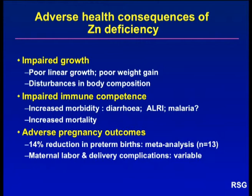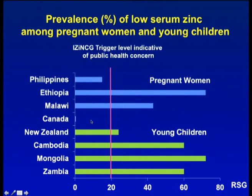In this slide, we present the prevalence of low serum zinc concentrations among pregnant women and young children studied in our laboratory. The red line indicates the trigger level set by iZinc, above which there is public health concern. We can clearly see that among pregnant women in Ethiopia and Malawi, there's a very high prevalence of zinc deficiency compared to Canadian counterparts. Among the young children, we have again very high prevalence in Cambodia, Mongolia and Zambia, but even in New Zealand, 23% of the young children have low serum zinc concentrations.